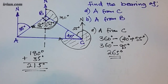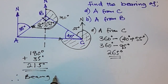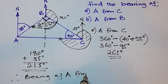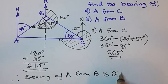Therefore, the bearing of A from B is 215 degrees.